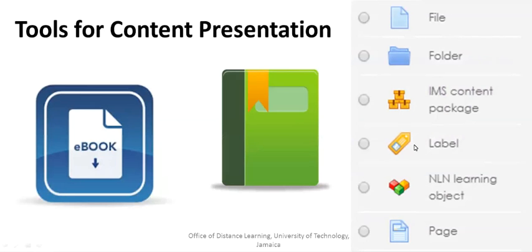We have labels and NLN learning objects. This is a very new feature on UTech Online, but it's very useful because it presents courses that you can have your students participate in. If you're teaching hospitality or whatever else, you can look in the NLN learning object and find courses directly related to your content that you look through and approve.